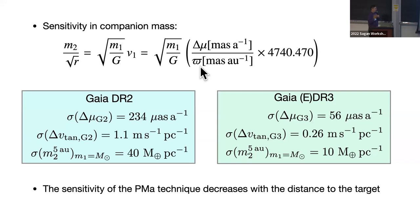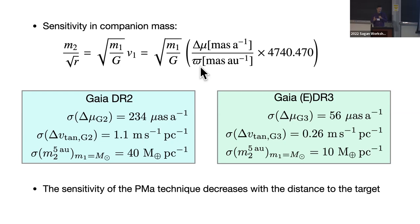If you translate this accuracy into a mass at five astronomical units of orbital radius — because there is a degeneracy between mass and orbital radius — then you obtain a sensitivity of 10 Earth masses per parsec, for a solar mass primary star. This gives an order of magnitude of the type of precision we can achieve.